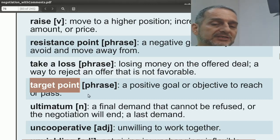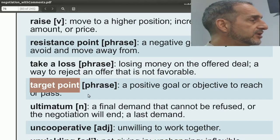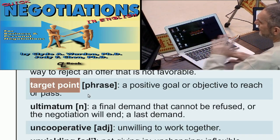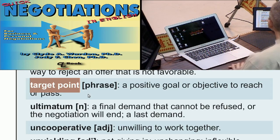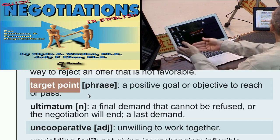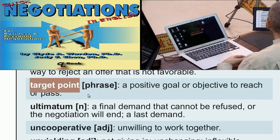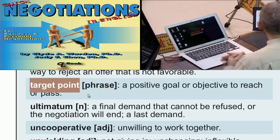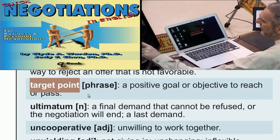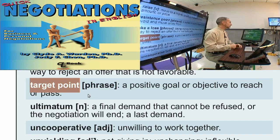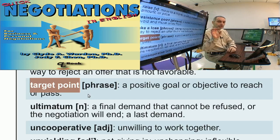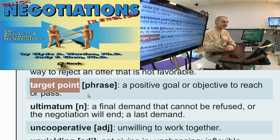Target point is related to the resistance point. The resistance point is where the deal is off if you go beyond it. The target point is what you would like to get — your goal, the best possible outcome. I want to emphasize that this is your secret information. Never let it out. You don't want the other side to know your target and your resistance point, because you want to get the best you can.